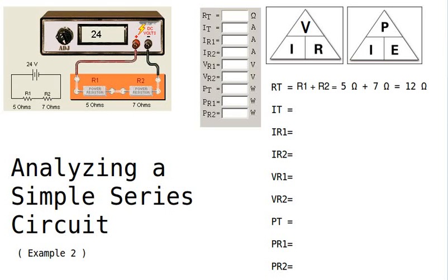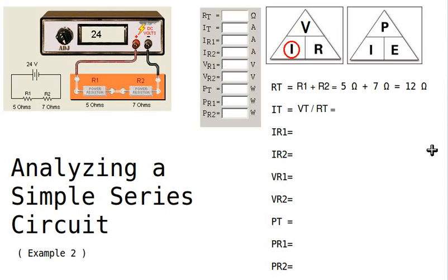Then we have to find the total current. Ohm's Law says the total current is equal to — using our little memory aid circle and covering I — current is equal to voltage divided by resistance. So the total current would be the total voltage, the power supply voltage, divided by the total resistance RT, which we calculated as 12 ohms. So our total current is 24 volts divided by 12 ohms, or 2 amperes.